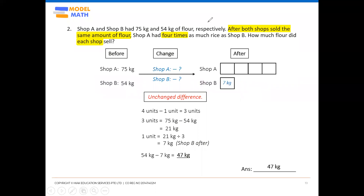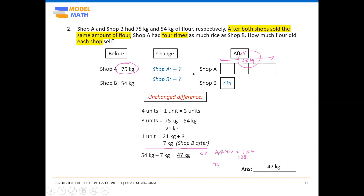To verify using Shop A: Shop A's after value is 4 units, so 7 times 4 equals 28 kg. Shop A's before was 75 kg, so the amount sold is 75 minus 28, which also gives 47 kg. Both shops sold 47 kg of flour. This confirms the unchanged difference concept.